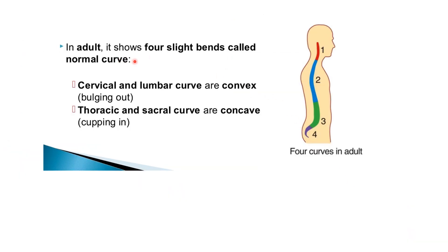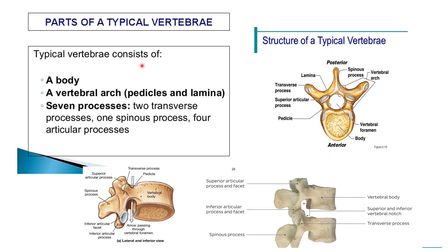In adults there are four slight bends called normal curves. The cervical and lumbar curves are convex — bulging outward — while the thoracic and sacral curves are concave. These are the normal curves of the vertebral column.